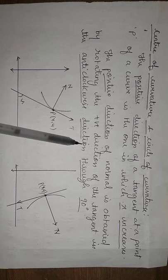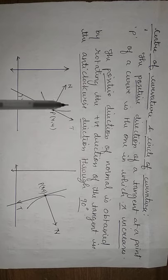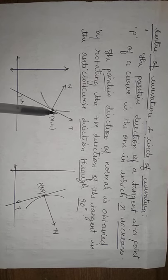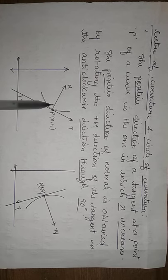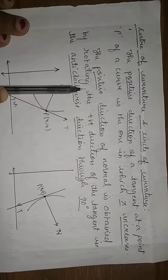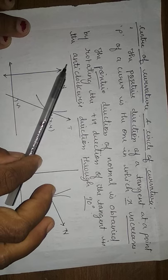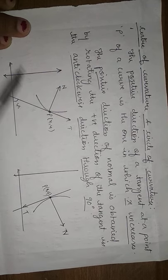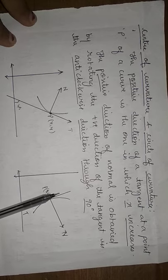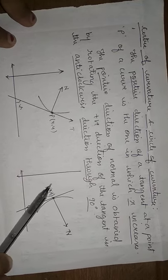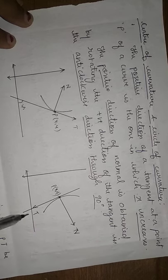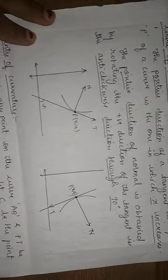Anti-clockwise means the opposite of the way a clock moves. To draw the positive direction of the normal, we rotate the tangent anti-clockwise, making an angle of 90 degrees with the tangent. This gives the positive direction of the normal. For the negative direction of the tangent, rotating anti-clockwise will reach the negative direction of the normal.